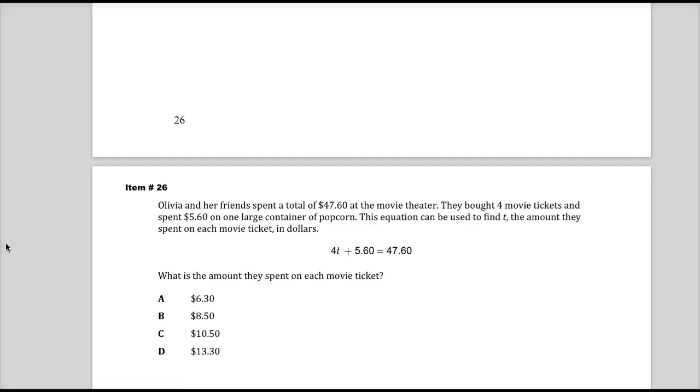Anyway, so they bought four tickets, one large popcorn. The equation can be used to find t, the amount they spend on movie tickets in dollars. So they give you the equation, why wouldn't you just use it? I mean, they're not going to put that in there if they're not going to make you use it at some point. What is the amount they spend on each movie ticket?